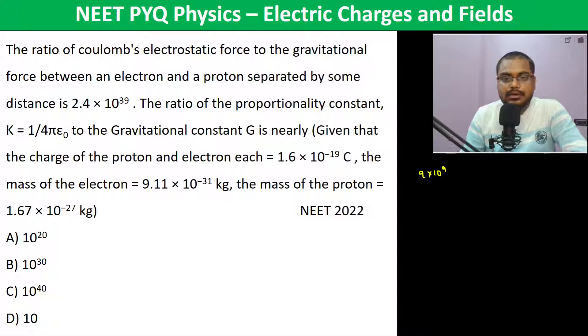That is 1.6 × 10^-19 × 1.6 × 10^-19 divided by r², and then divided by Gm1m2: 6.6 × 10^-11 × the mass 9.1 × 10^-31 × this mass 1.6 × 10^-27 divided by r².